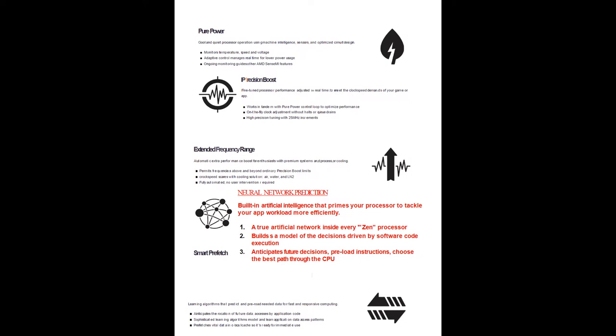So this is worth noting here that there's a neural network in this. It builds a model of the decisions driven by the software code execution and optimizes what's going on based on learning what's been executing. It anticipates future decisions and preloads instructions and chooses the best path through the CPU. That's not a trivial thing. That is a new thing to be putting in these processors.